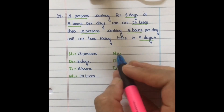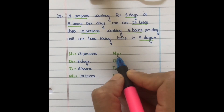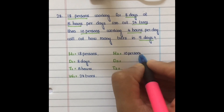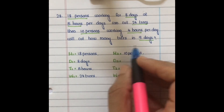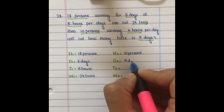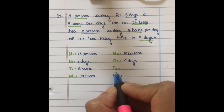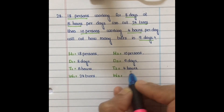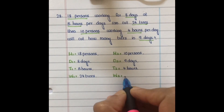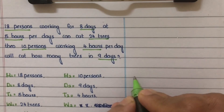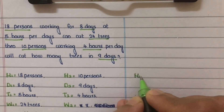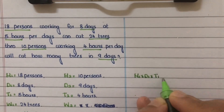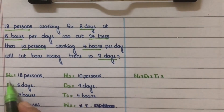For the second case: number of men is 10 persons, number of days is 9 days, time is 4 hours per day, and work done (number of trees cut) is what we need to find.